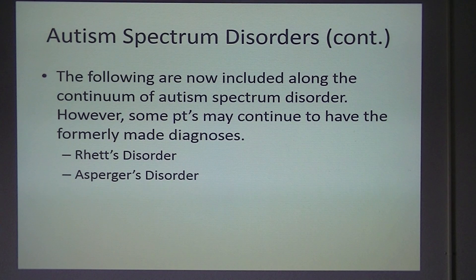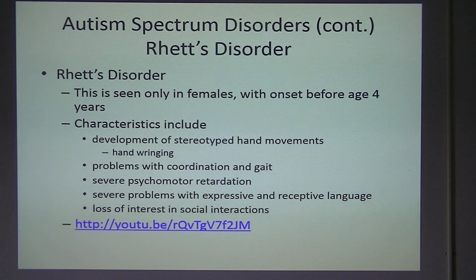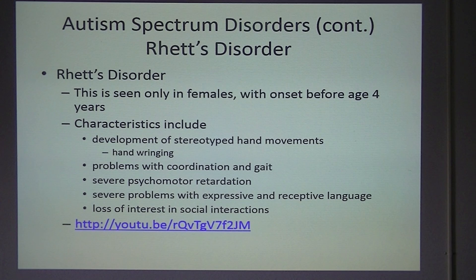Rett's Syndrome is a neurodevelopmental disorder characterized by a child's inability to physically perform purposeful movements. It's easier to understand by watching a video than reading about it. Children with Rett's Syndrome have autistic behaviors such as impaired social interaction and impaired communication.